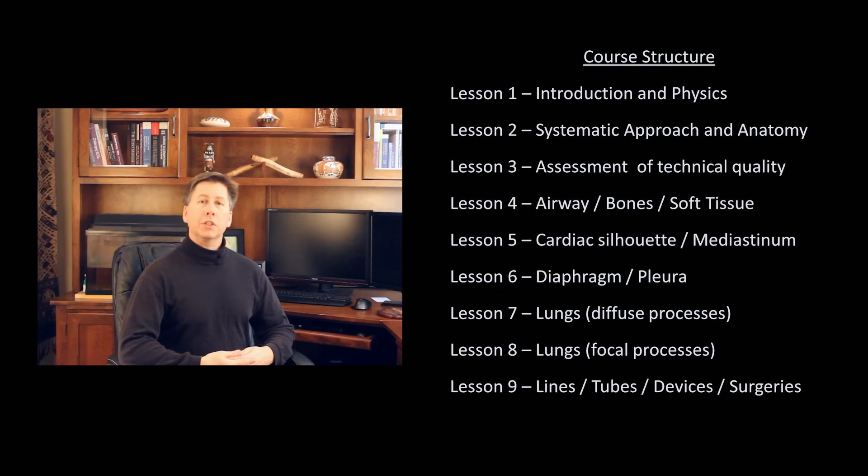Lesson 9 will discuss how to assess the placement of lines and tubes, as well as how to identify devices and findings consequent from prior surgeries, such as artificial heart valves. Finally, Lesson 10 will be a self-assessment where unknown chest films are displayed alongside a brief clinical vignette, and after a chance for you to pause the video and study the films on your own, I'll review them. As I implied a moment ago, by the end of these 10 lessons, you should be able to identify the overwhelming majority of abnormalities visible in a conventional chest x-ray.